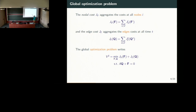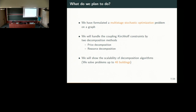What we want to do is to decouple these coupling constraints by using decomposition techniques, like price or resource decomposition. We will apply our two algorithms — price and resource decomposition — to problems corresponding to distribution networks.